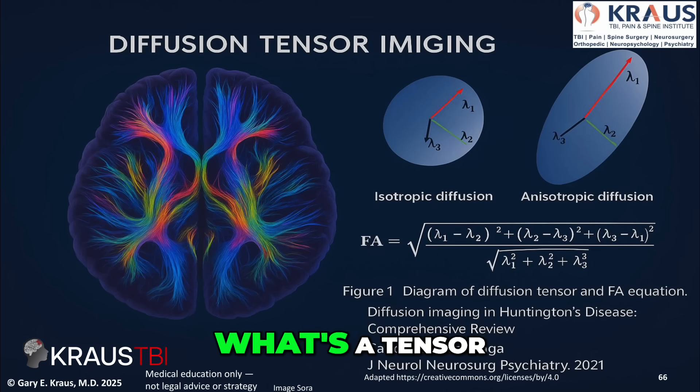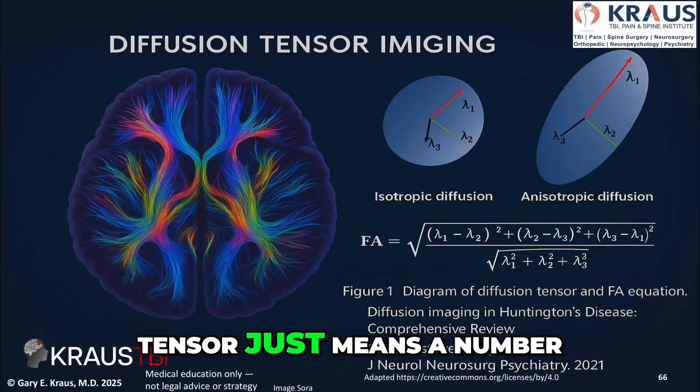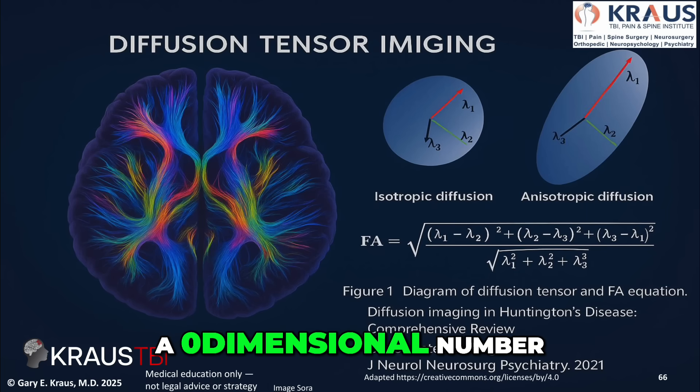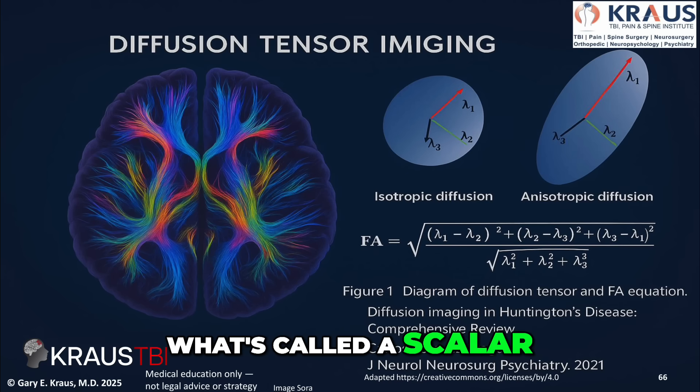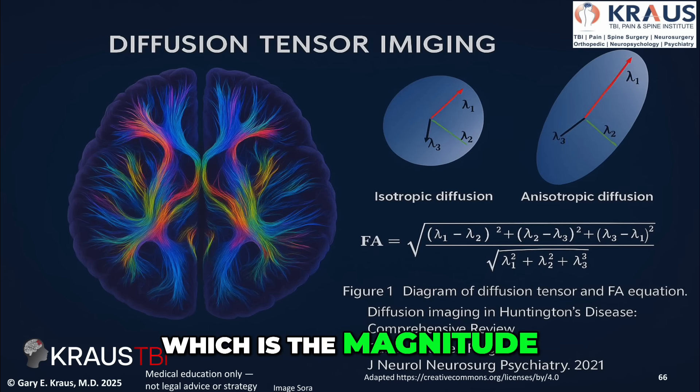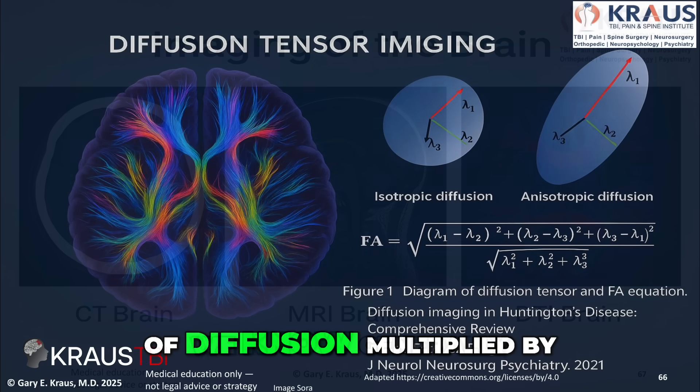The question is, what's a tensor? A tensor just means a number — a zero-dimensional number, what's called a scalar — which is the magnitude of diffusion.